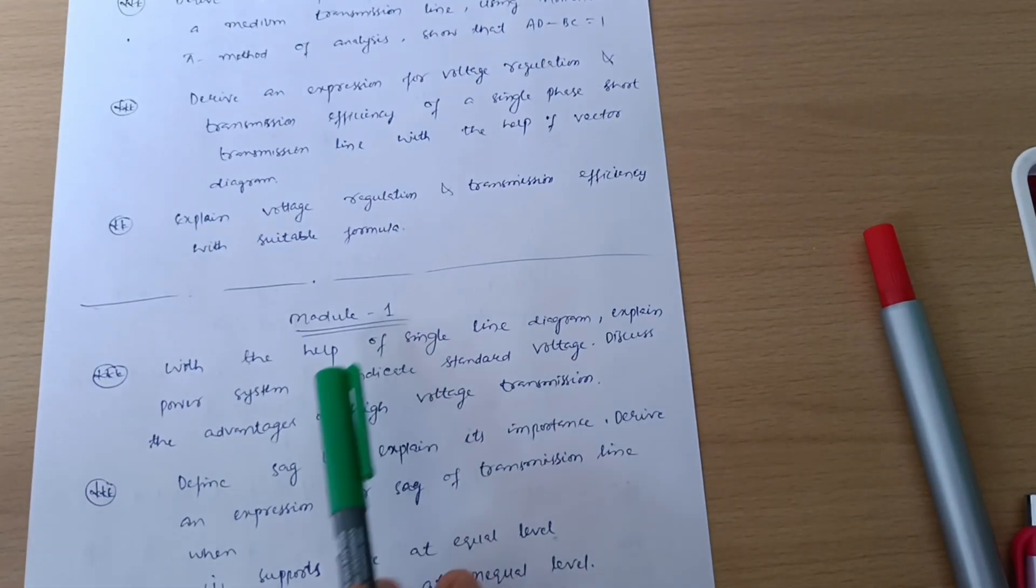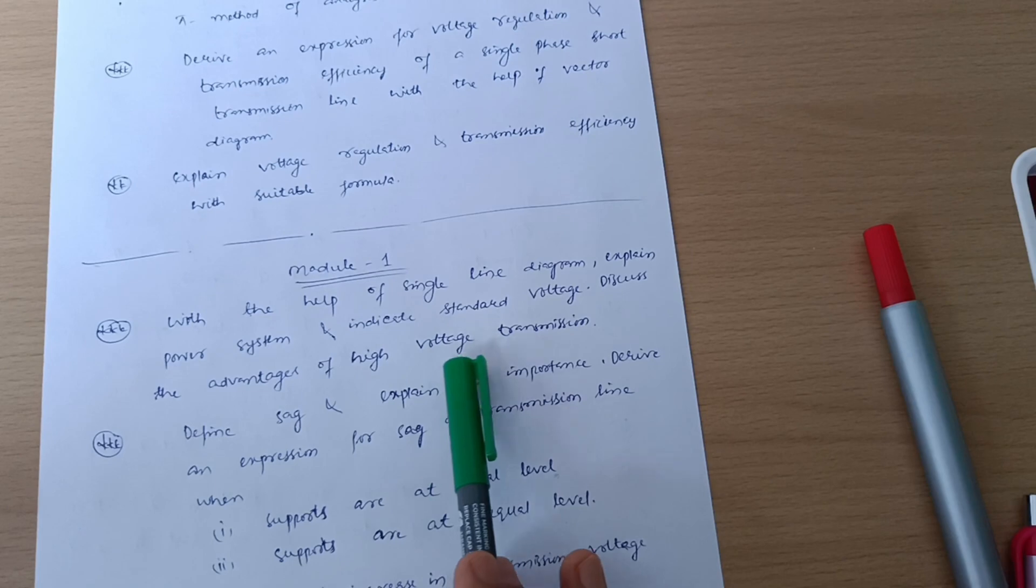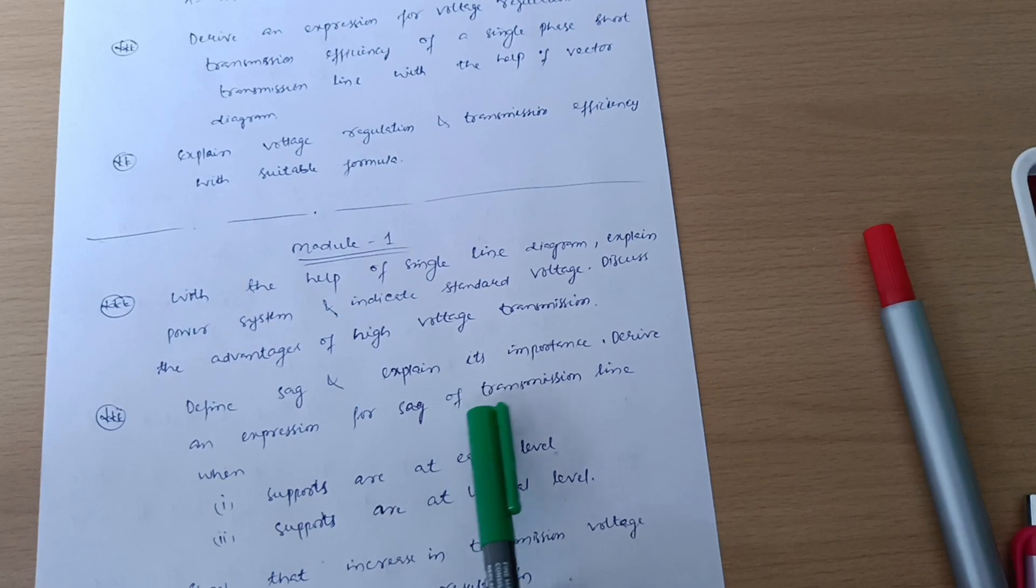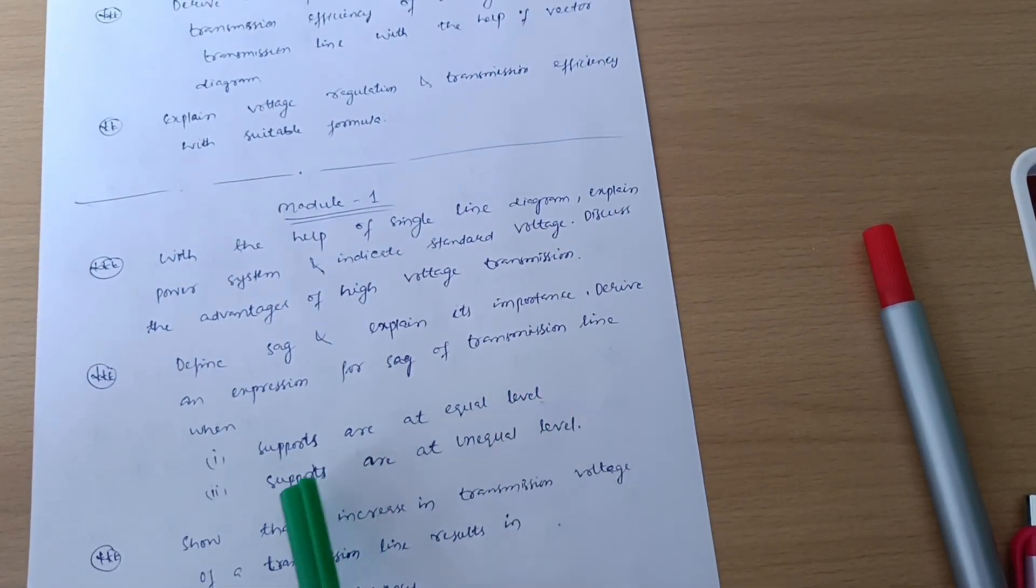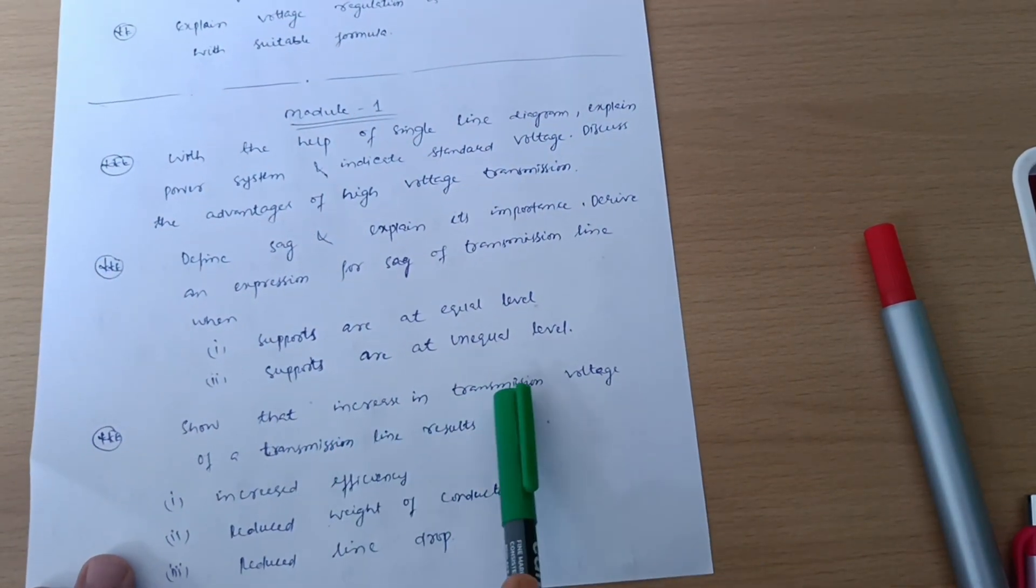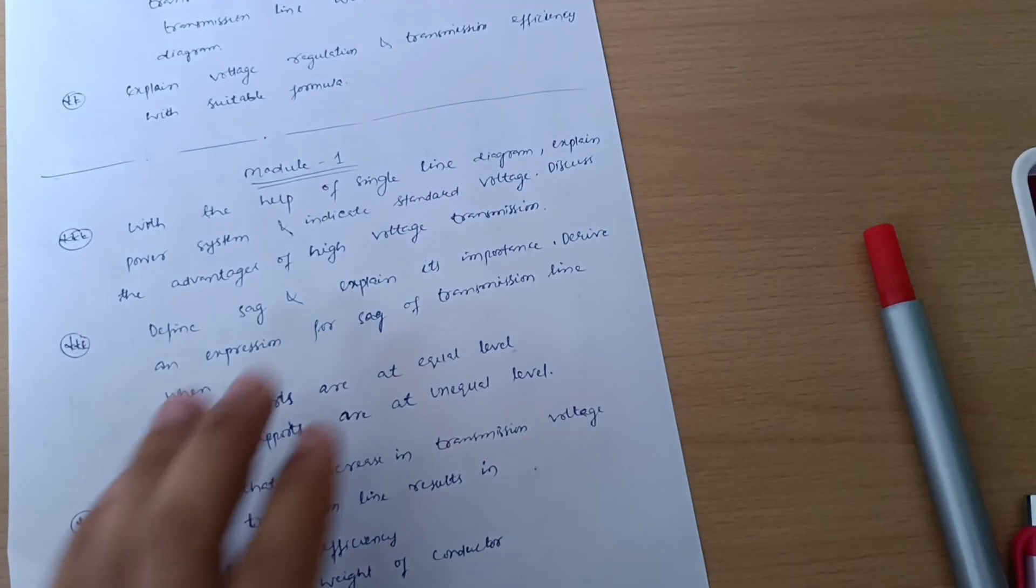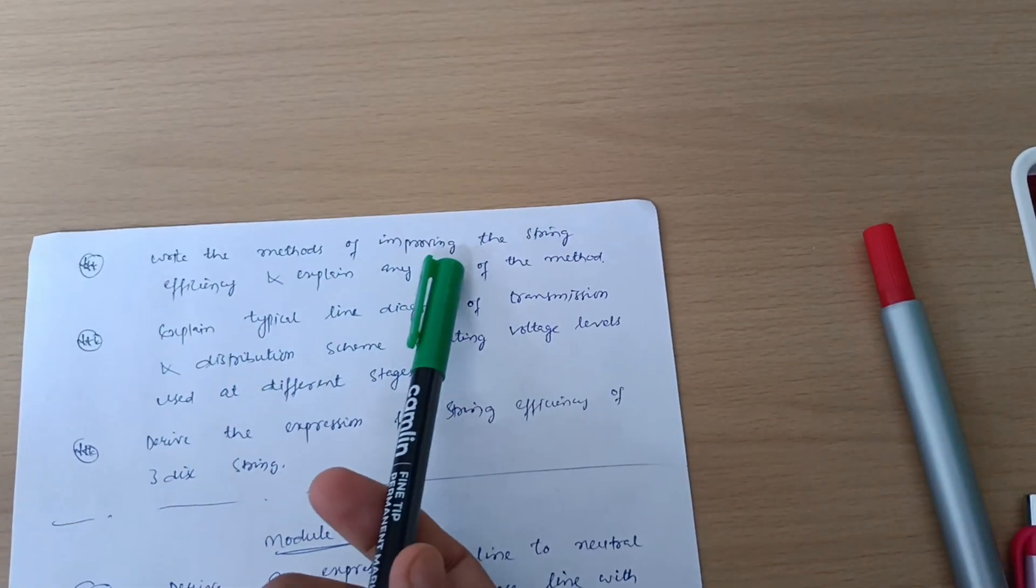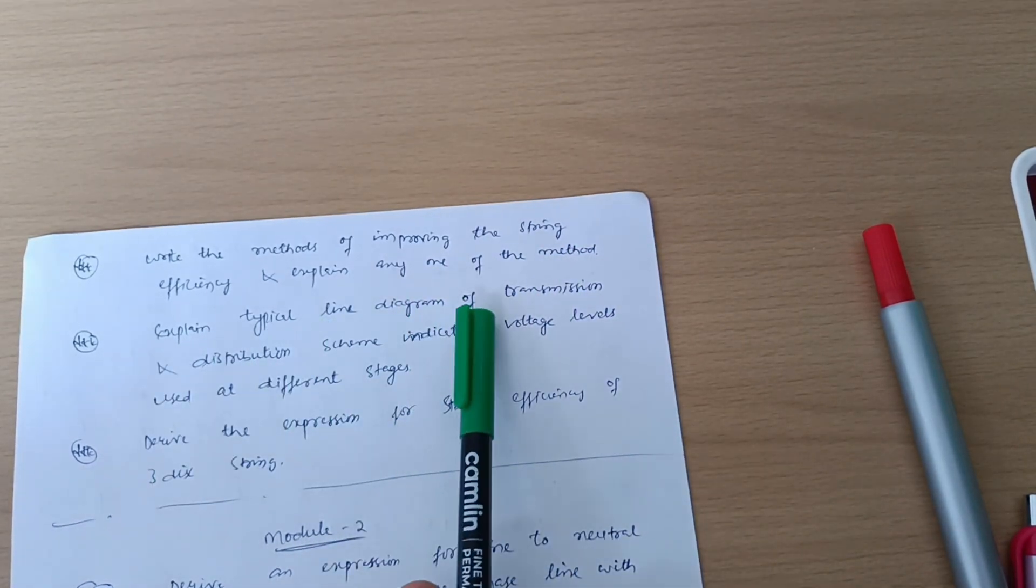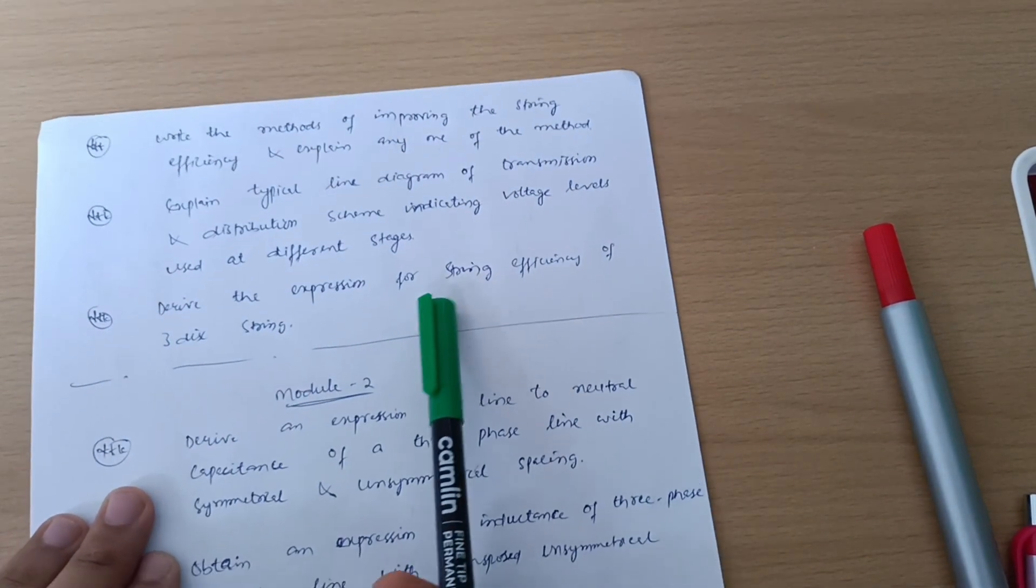Next is Module 1: with the help of single line diagram, explain power system and indicate standard voltage levels. Discuss the advantages of high voltage transmission. Define sag and explain its importance. Derive an expression for sag of transmission line when supports are at equal level and at unequal level. Show that increase in transmission voltage results in increased efficiency, reduced weight of conductor, and reduced line drop. Write the methods of improving string efficiency and expand any one method. Draw typical line diagram of transmission and distribution scheme indicating voltage levels used at different stages. Derive the expression for string efficiency of 3-disc string.